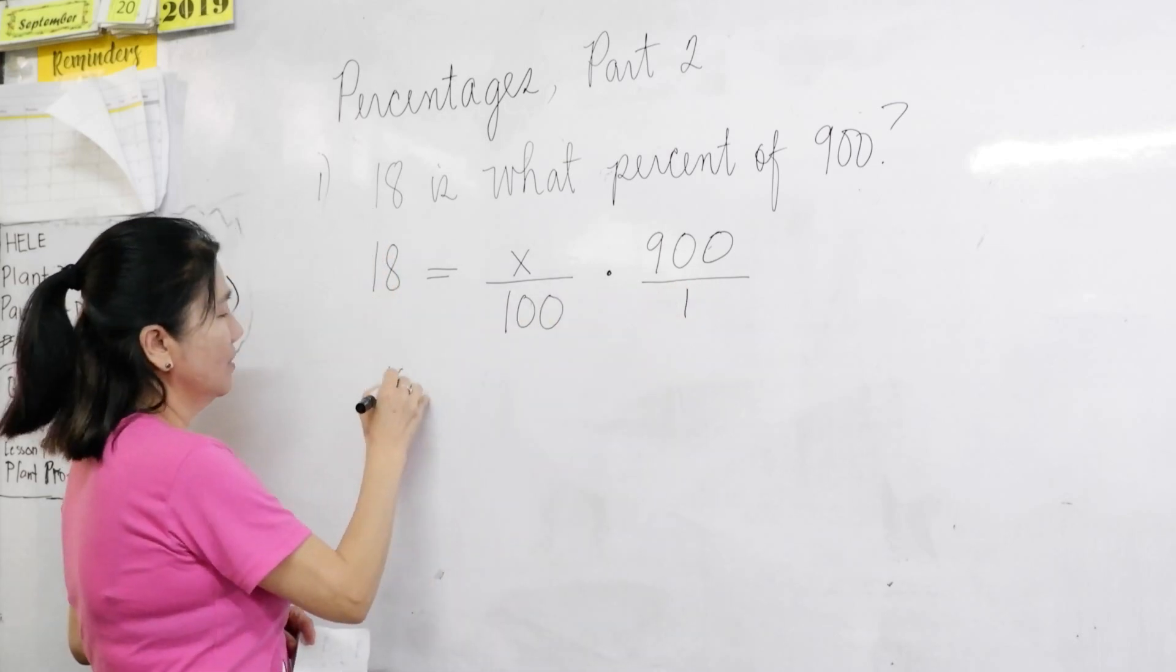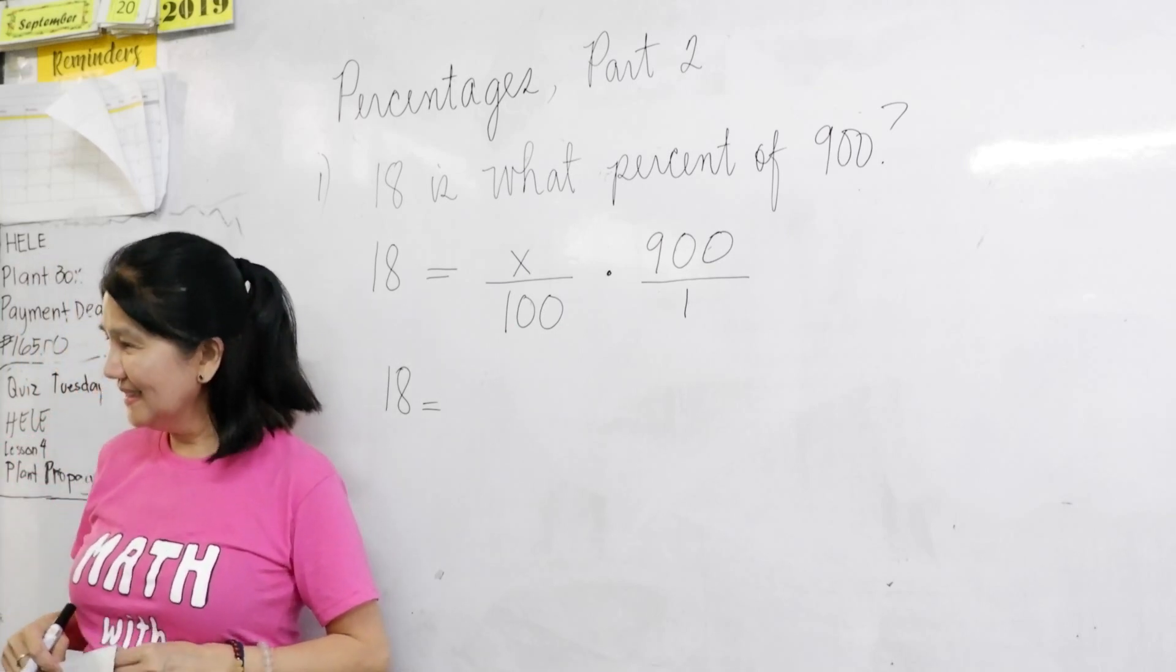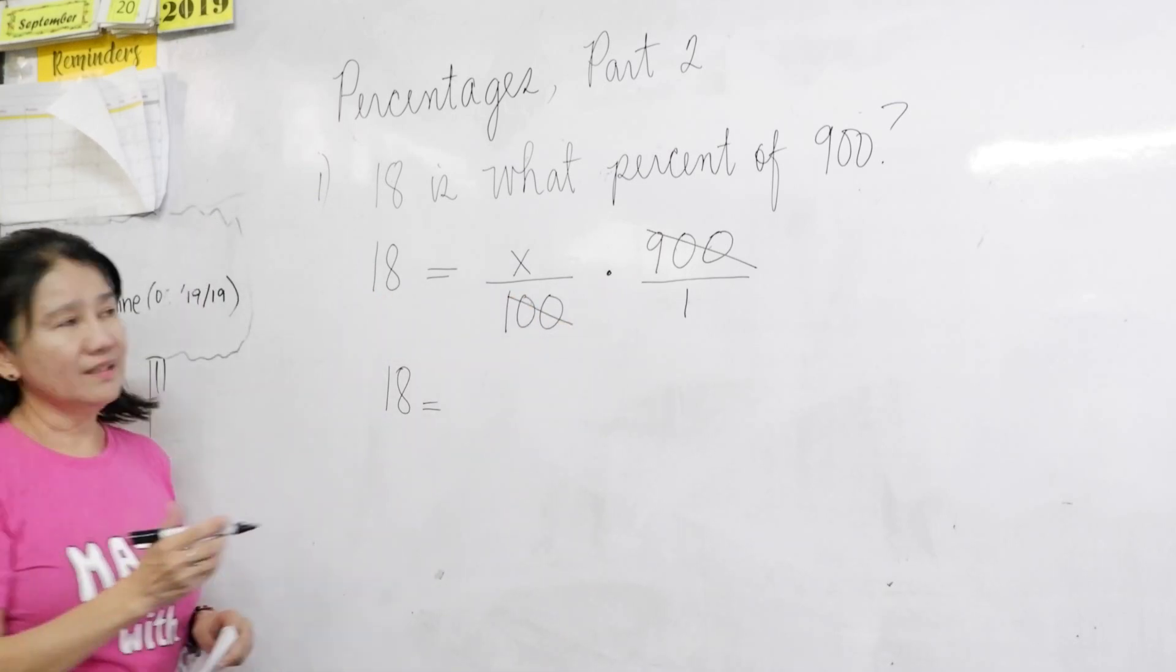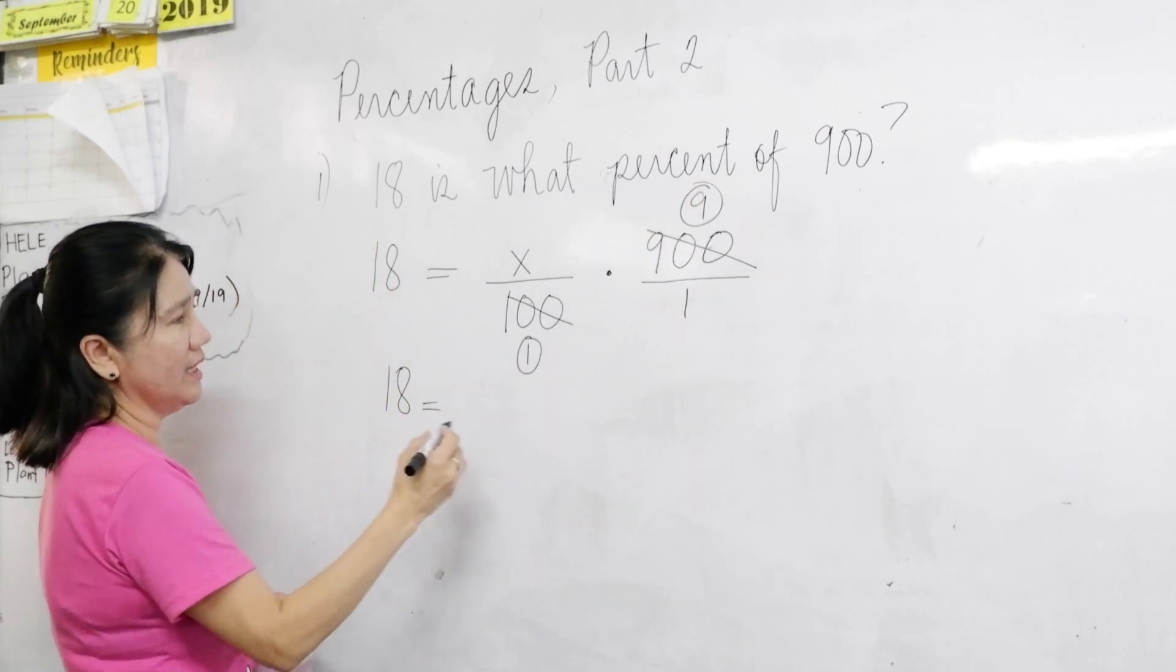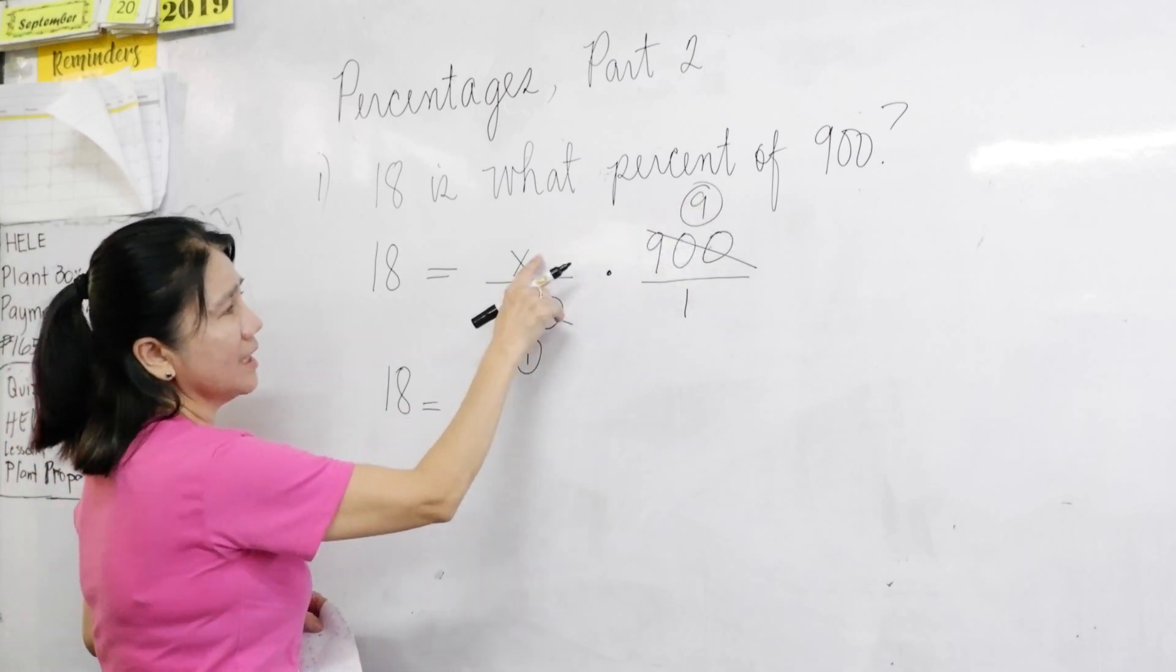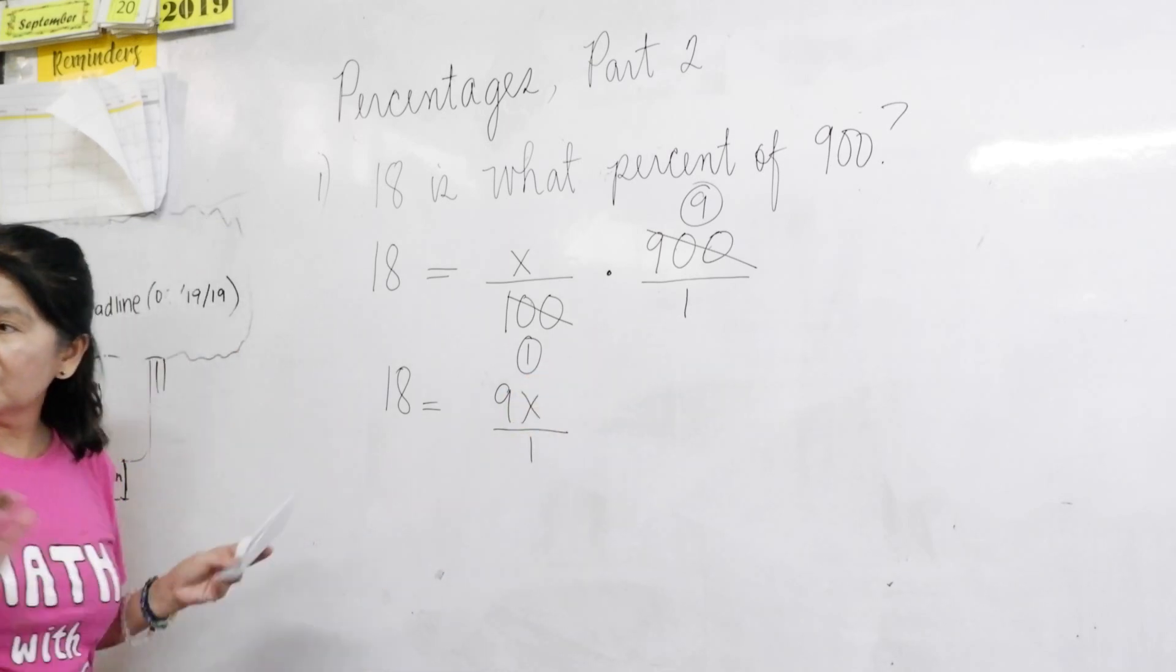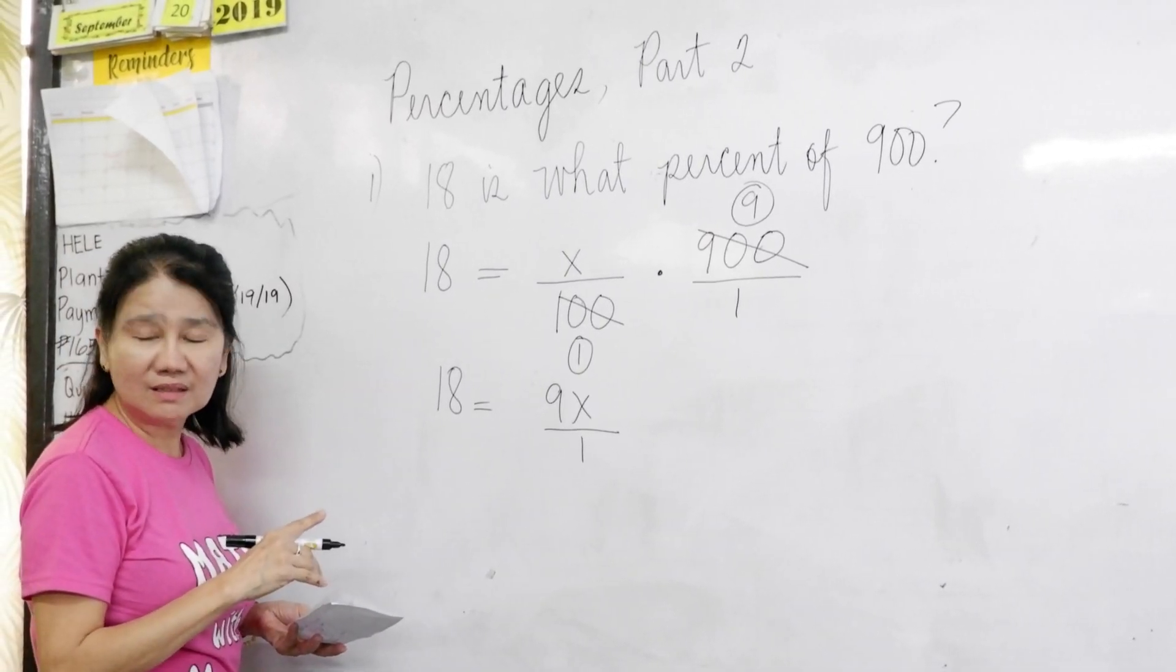Now, what do you see here? What can be cancelled? Miggy? Nine hundred and one hundred. Very good. Nine hundred divided by one hundred is? Nine and one. Yes. Correct. Nine and one. There. So, we have here, nine times x is nine x over one times one is one. You don't actually write one anymore, right? May I erase it? Yes.